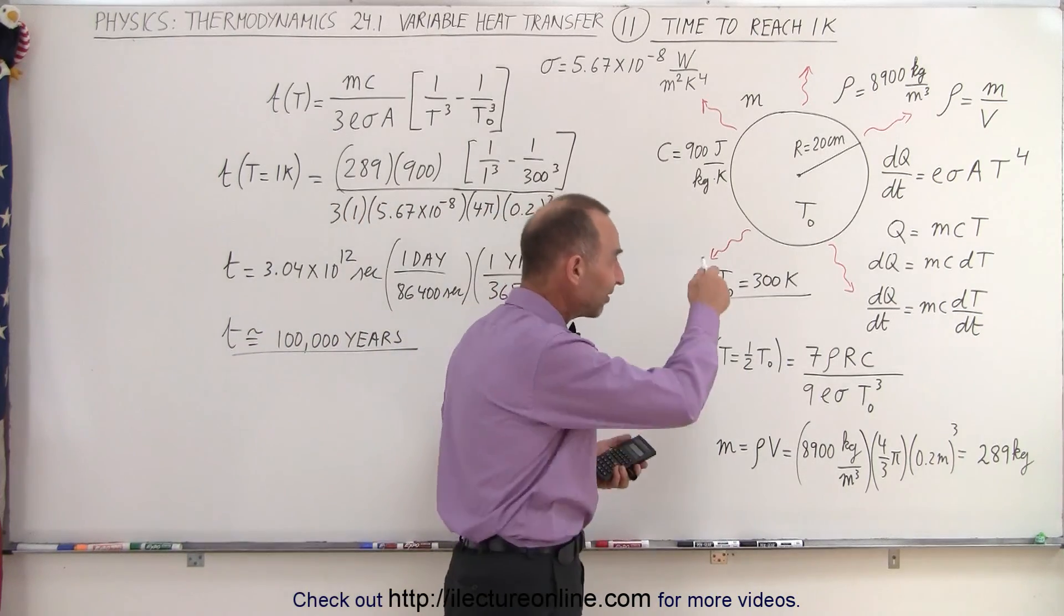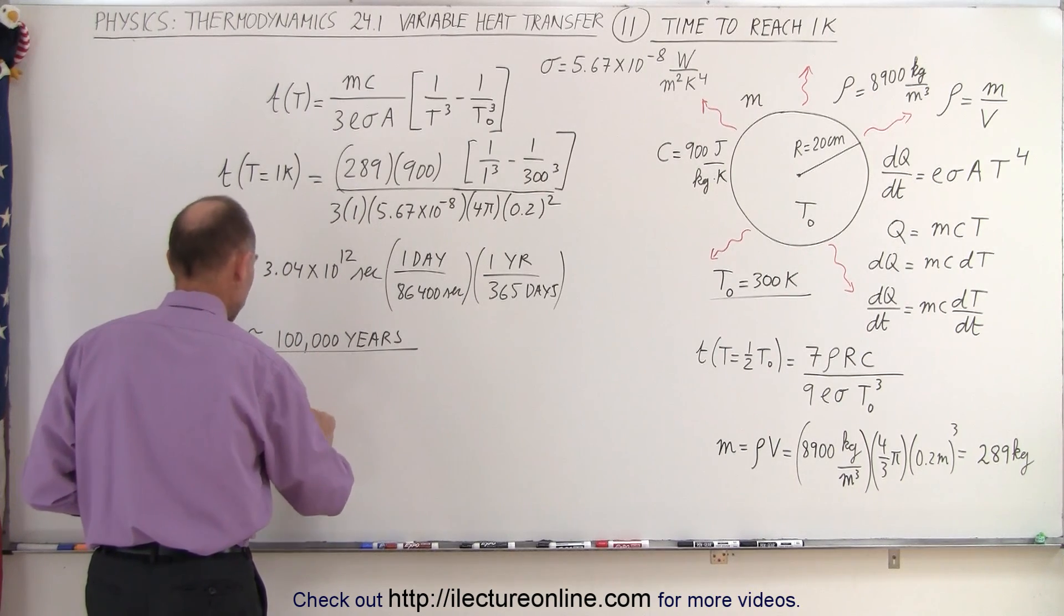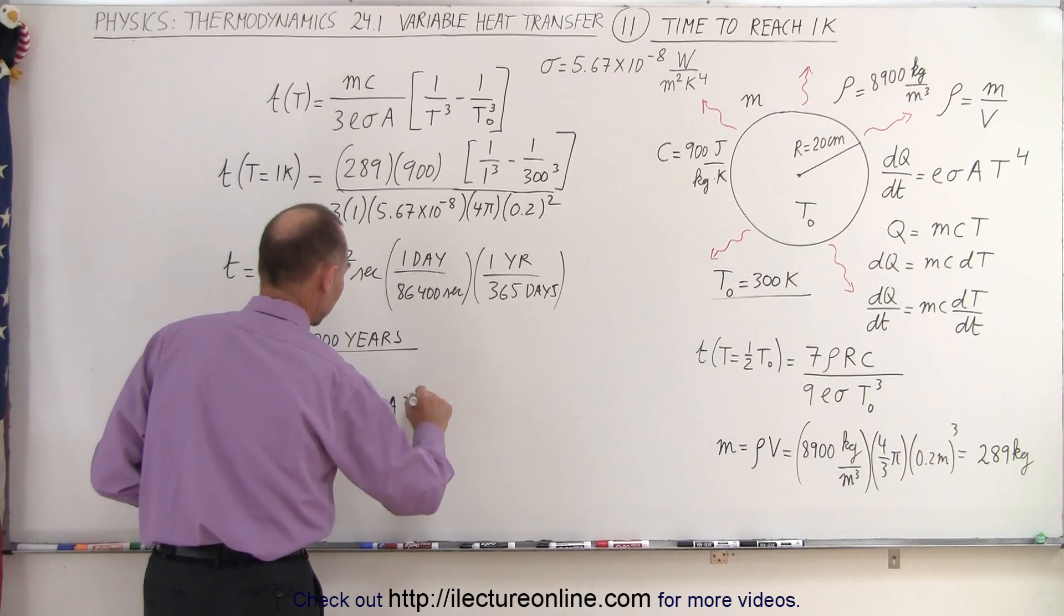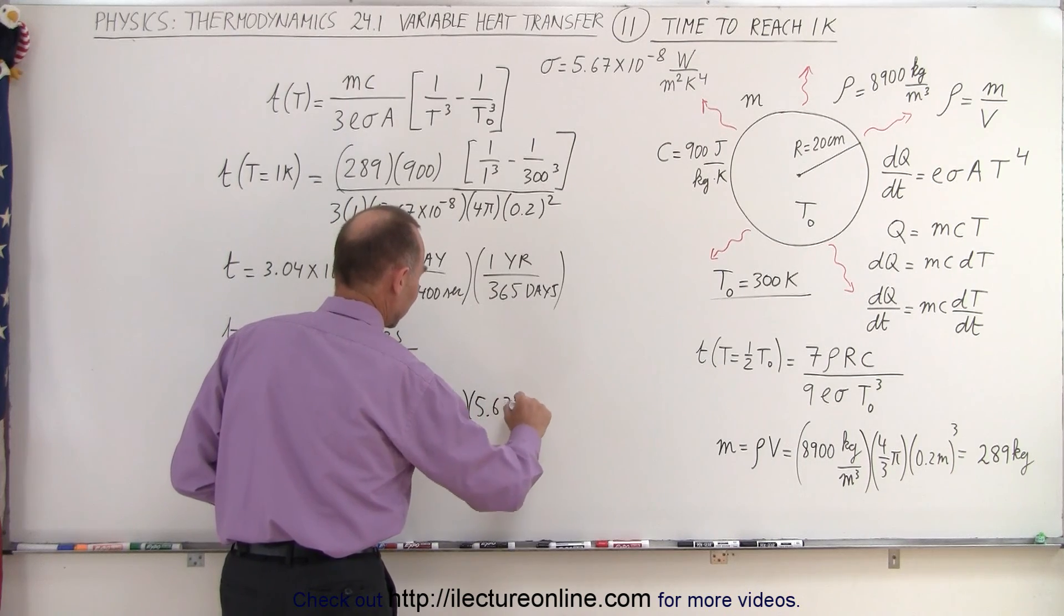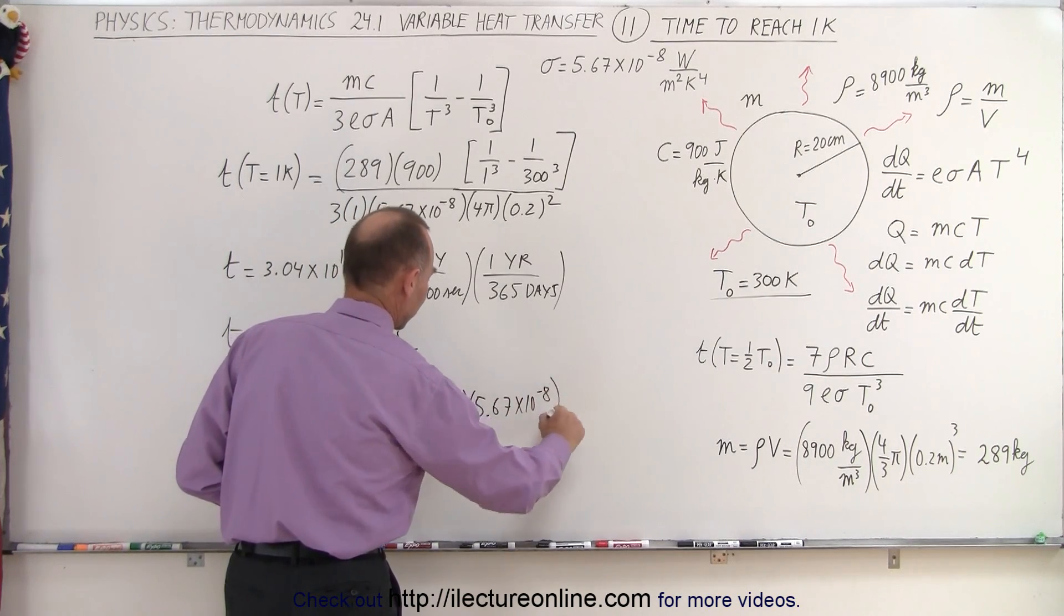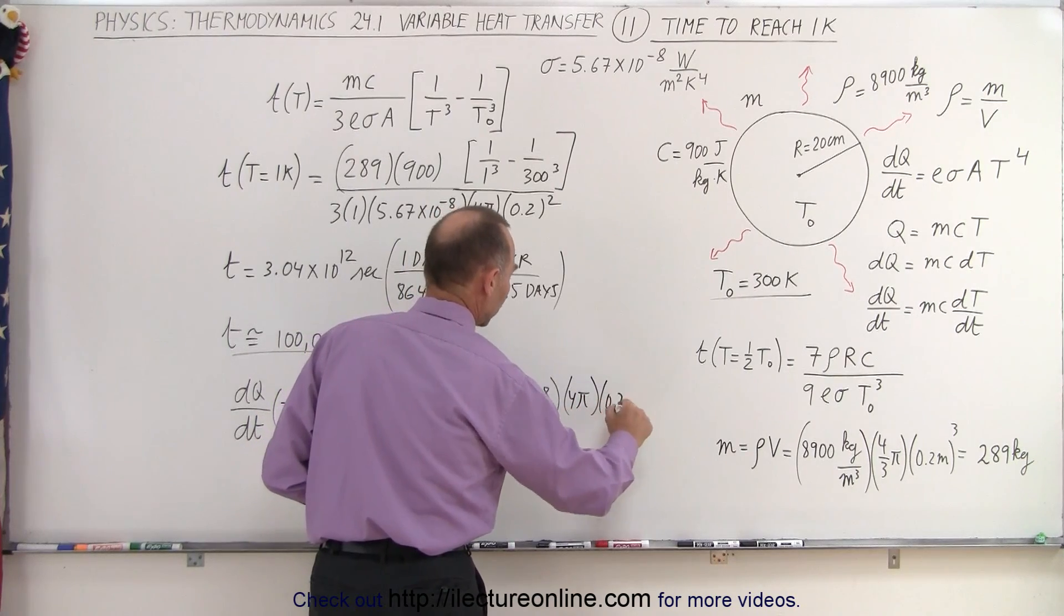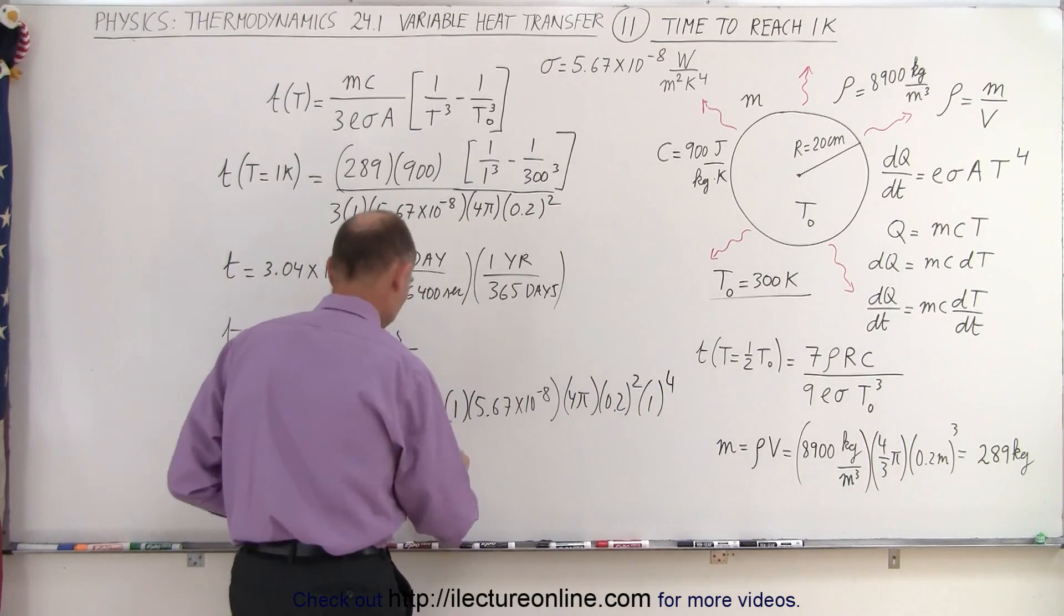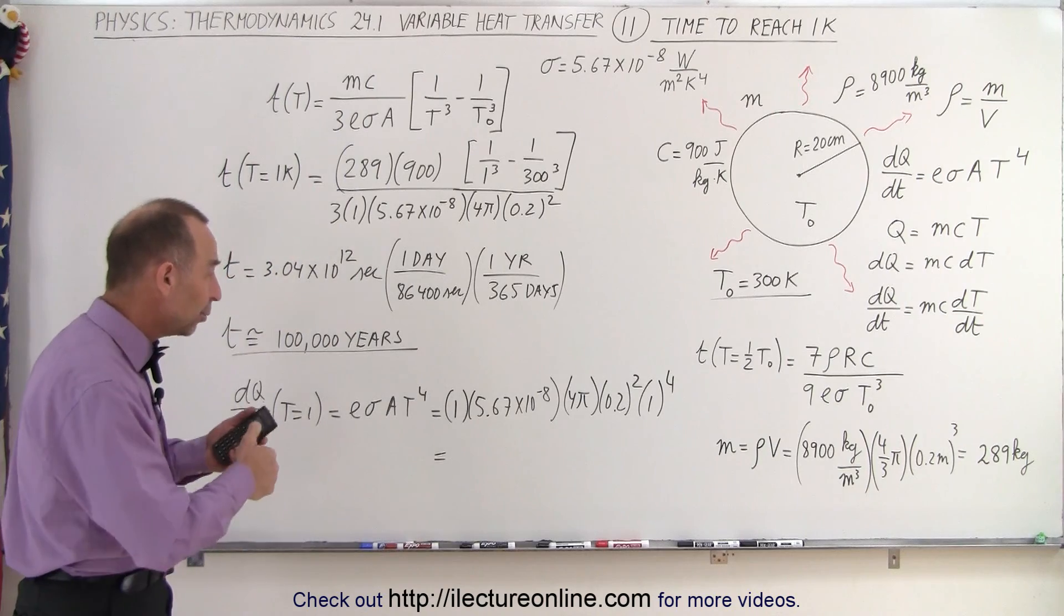So let's calculate the dQ/dt, the dQ/dt at t equals one kelvin. It would be ε times σ times A times T to the fourth power. So that would be one times 5.67 times 10 to the minus eight. Area would be 4π times 0.2 squared, and the temperature would be one to the fourth power. Let's see at what rate the heat then would be radiated out from the sphere.